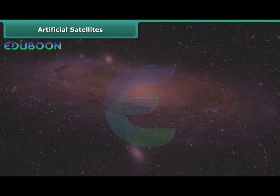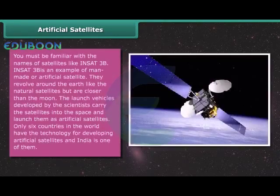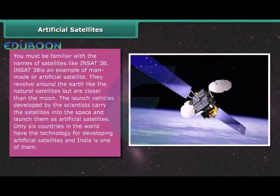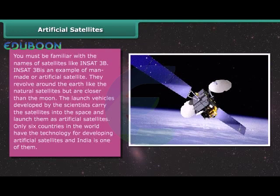Artificial Satellites. You must be familiar with the names of satellites like INSAT-3B. INSAT-3B is an example of man-made or artificial satellite. They revolve around the earth like the natural satellites but are closer than the moon. The launch vehicles developed by the scientists carry the satellites into the space and launch them as artificial satellites. Only six countries in the world have the technology for developing artificial satellites and India is one of them.